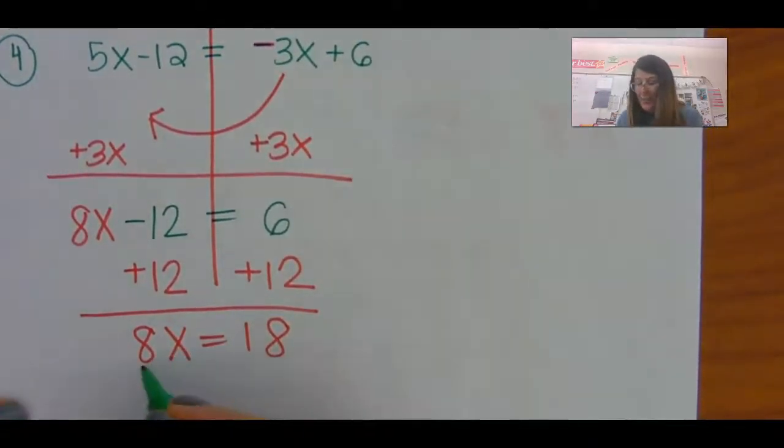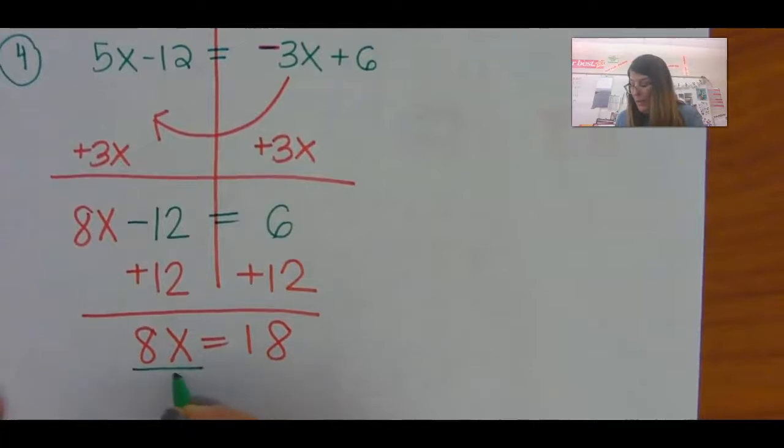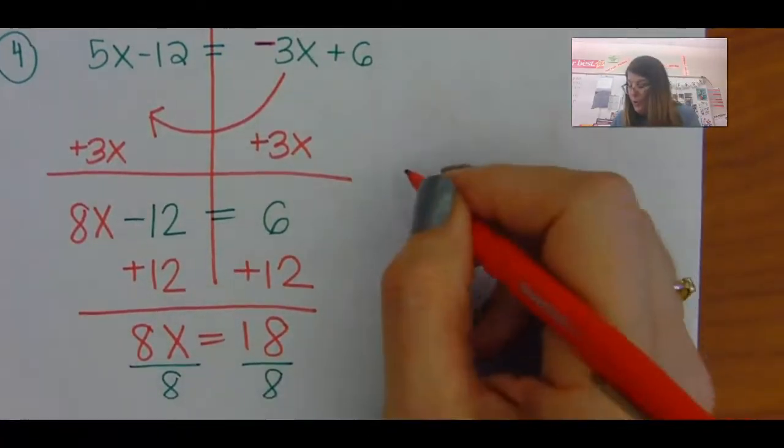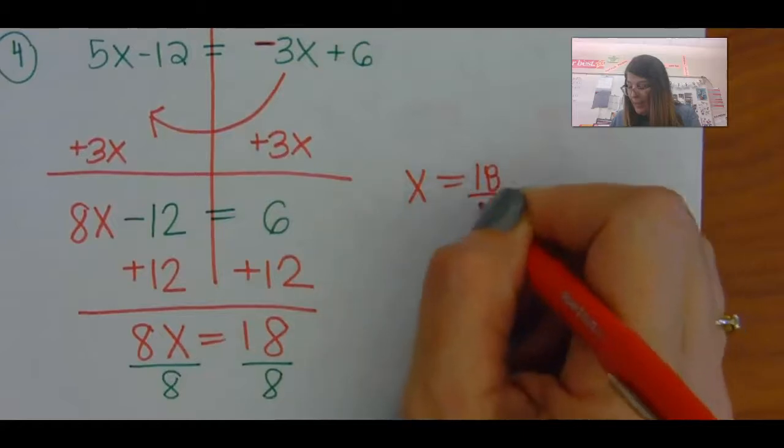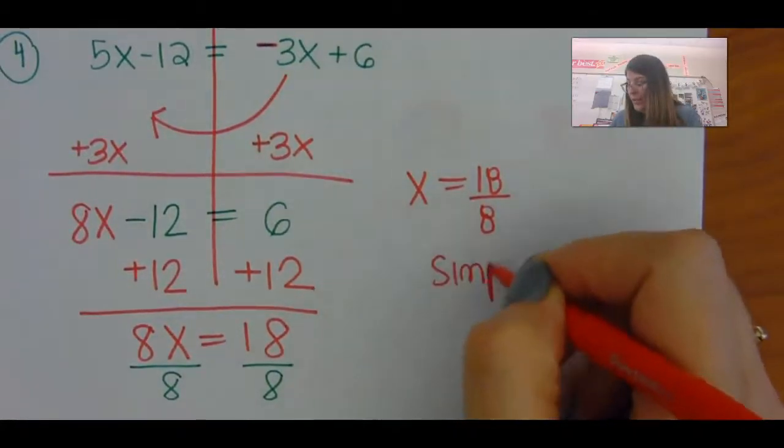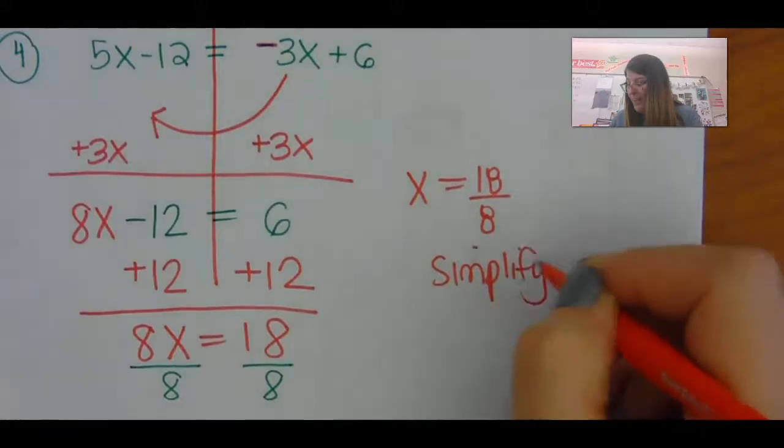Now, 8 and x, when they're touching, they're multiplying. So I'm going to divide both sides by 8. So if you type in 18 over 8 as your answer, you're going to get it wrong because you need to simplify the fraction.